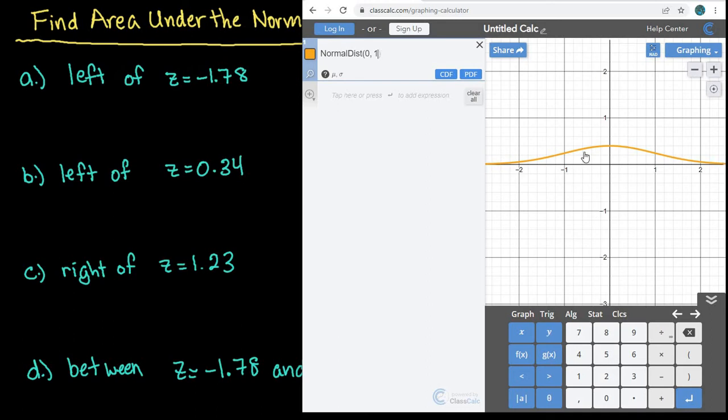If you notice, they did draw a curve over here to represent the normal curve, and I do want this to be in CDF, is what we're going to be looking for, because we're looking for all of the area starting from negative infinity up until negative 1.78.